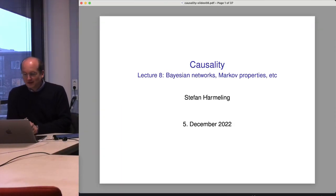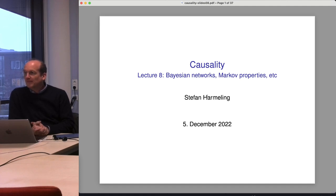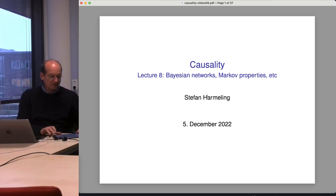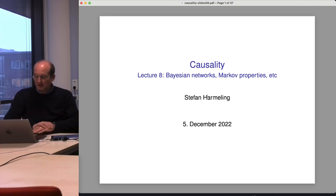Welcome everyone to our next lecture on causality. Today we talk about Bayesian networks and Markov properties of Bayesian networks. This is a non-causal topic, but we haven't talked much about the details. In the second lecture I pointed to some videos covering basics about probabilities and Bayesian networks, but since I told you that you don't have to watch that, now is the time to learn about Bayesian networks.